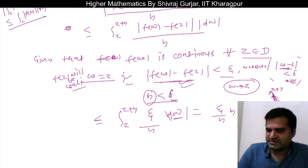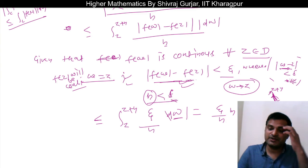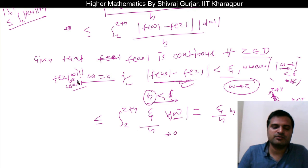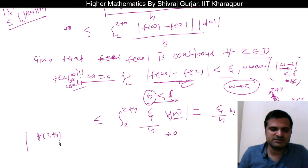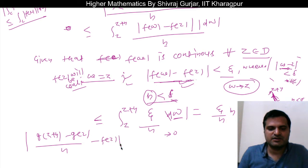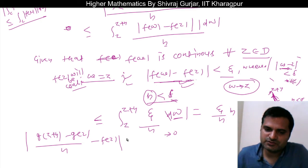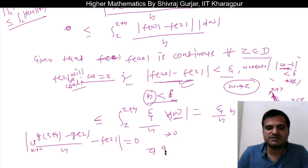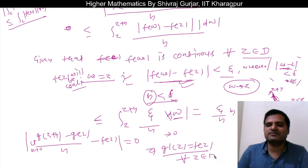This epsilon is very small. For small h as h tends to 0, epsilon will also approach 0 because we have taken h small (less than delta). So when this approaches 0, the left-hand side — the modulus of [g(z+h) - g(z)]/h - f(z) — will be less than or equal to 0. But since it is a modulus, it cannot be less than 0. Therefore this will be 0, and taking the limit as h tends to 0, we can say g'(z) = f(z).